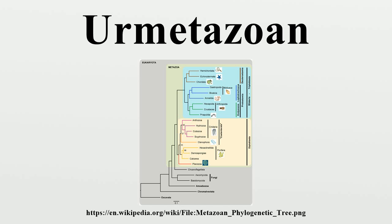Planella hypothesis: This idea suggests that metazoa derived from a planella, that is, the larva of certain cnidaria. Under this hypothesis, the larva became sexually mature through paedomorphosis, so could reproduce without passing through a sessile phase.